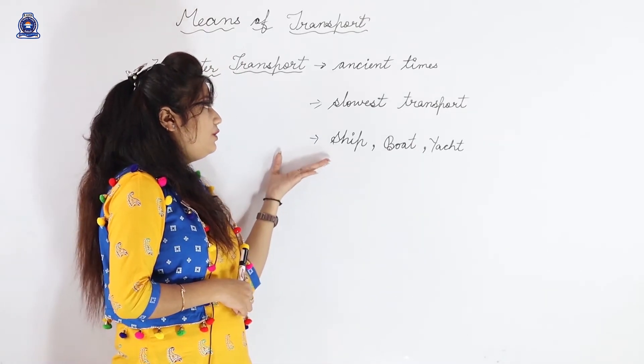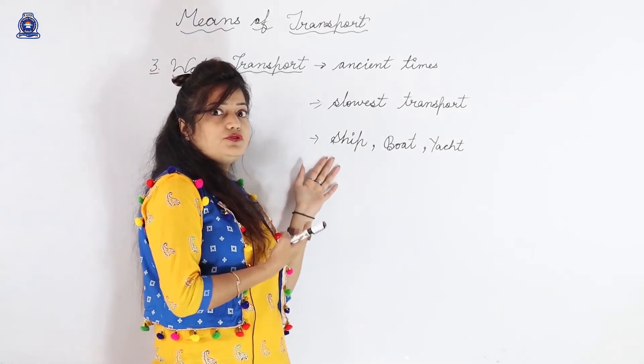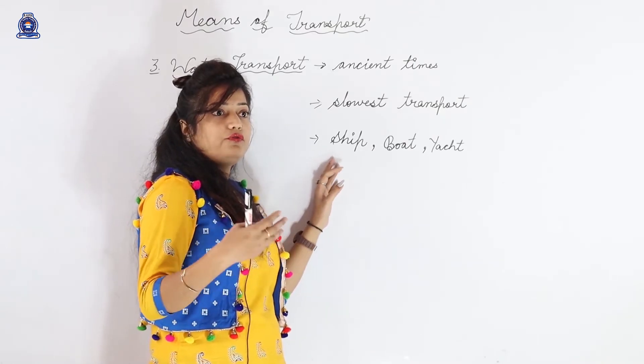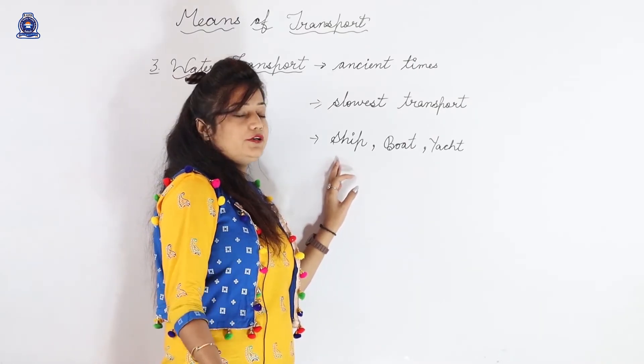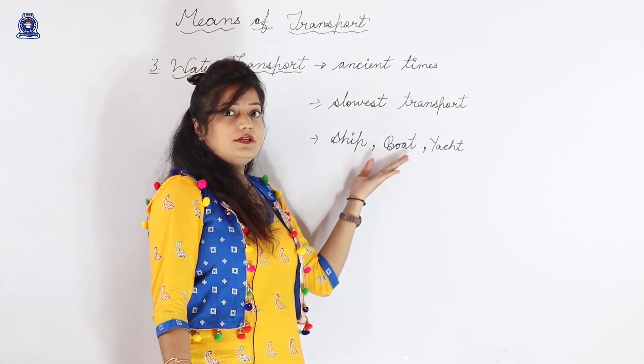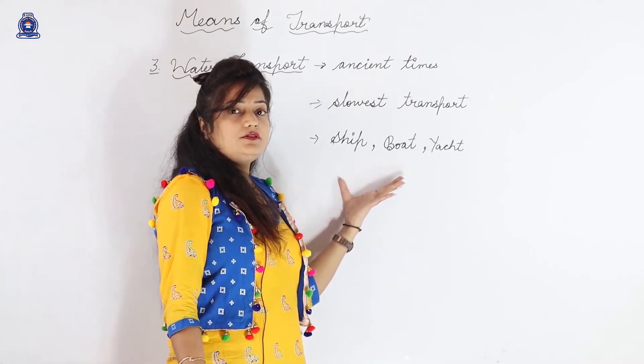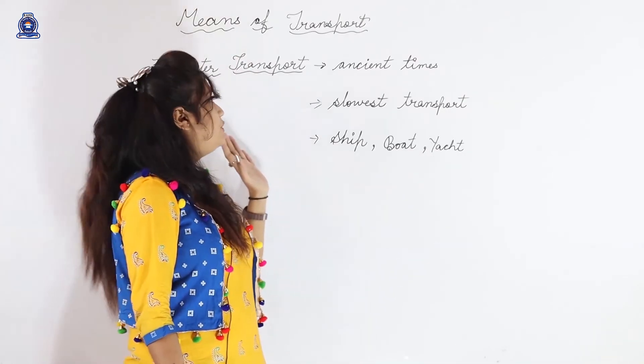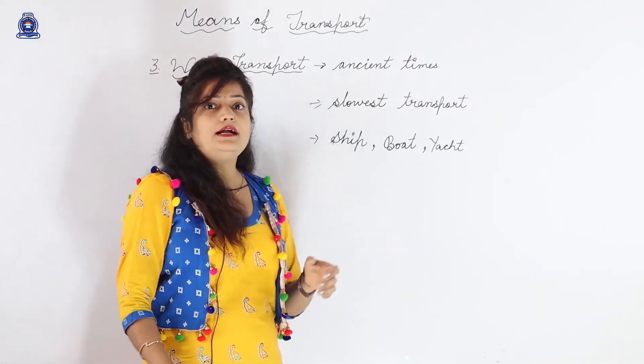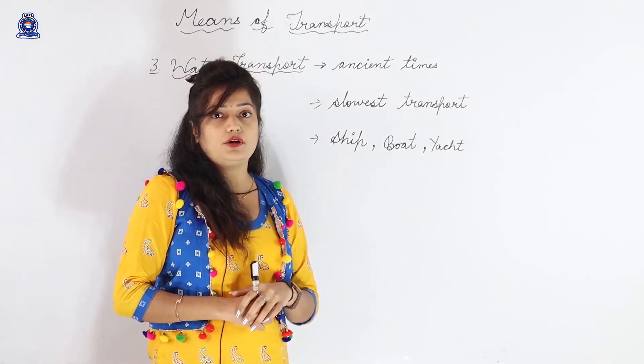Ship is used for good supplying and also for going from one city to other, one country to other country. And boat is used for shorter distance and yacht. These are the three examples of water transport. Now let's have a look on the examples of water transport.